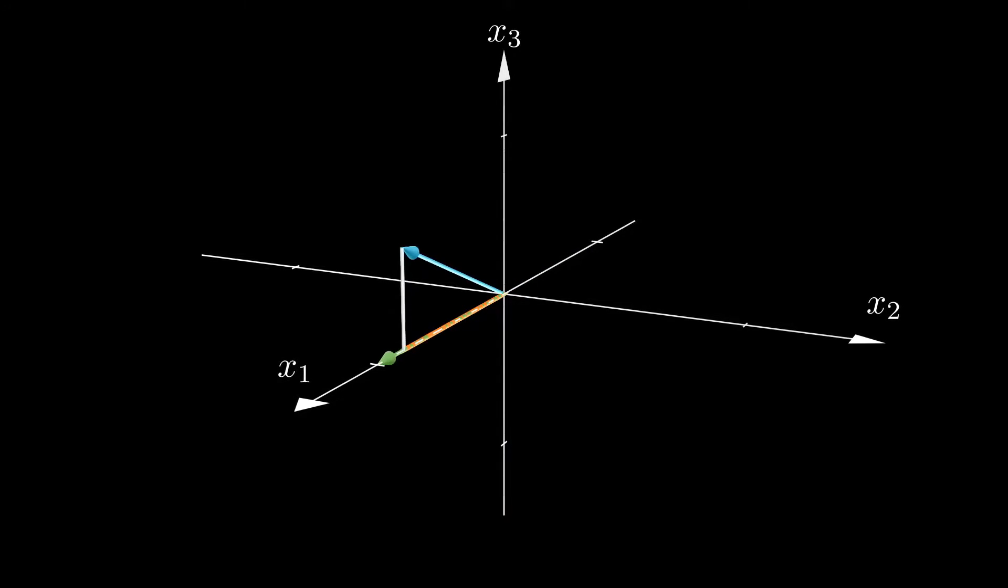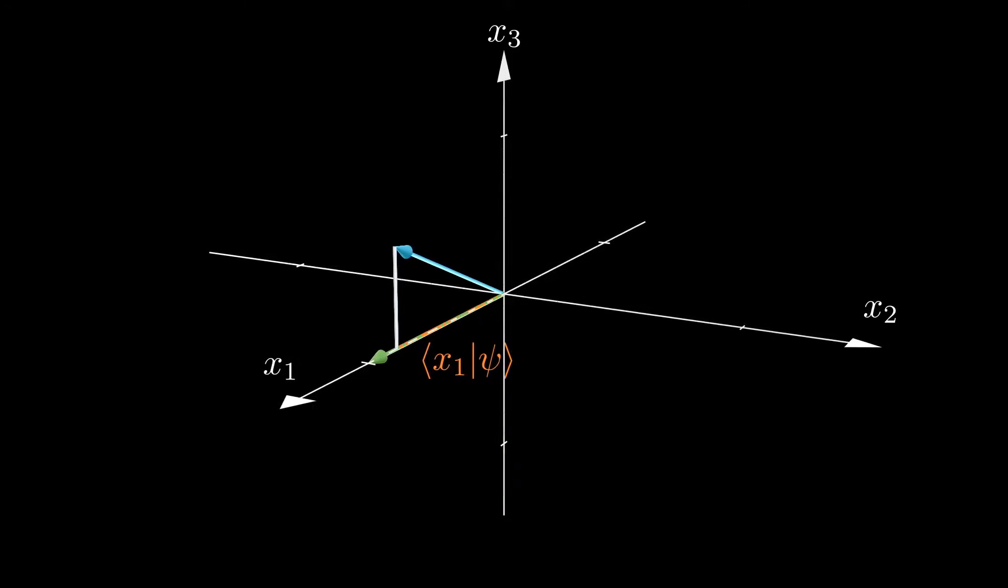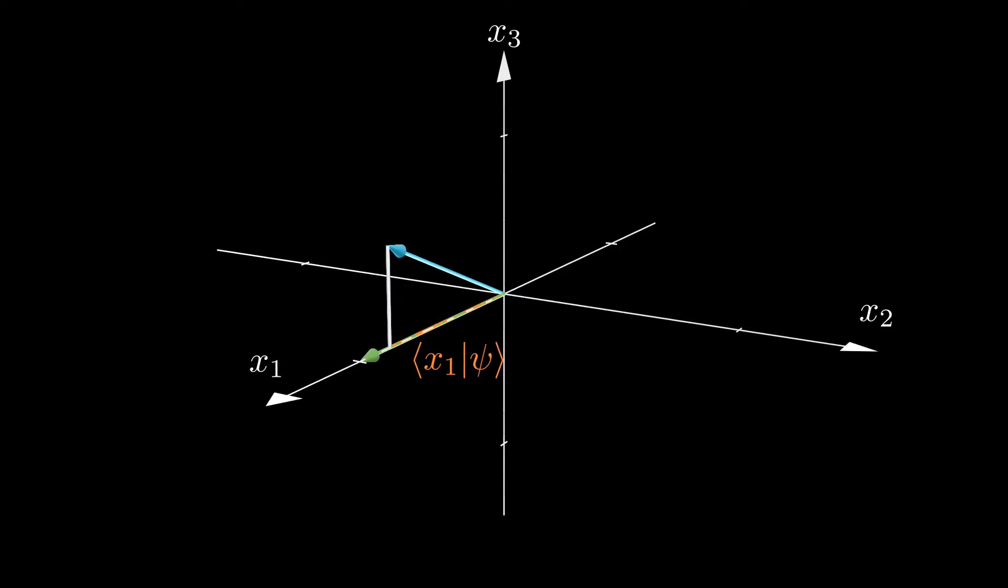Remember that this is an example in three spatial coordinates only, and we have to extend this space to contain an infinite number of orthogonal basis vectors, which is just a little tricky to visualize.